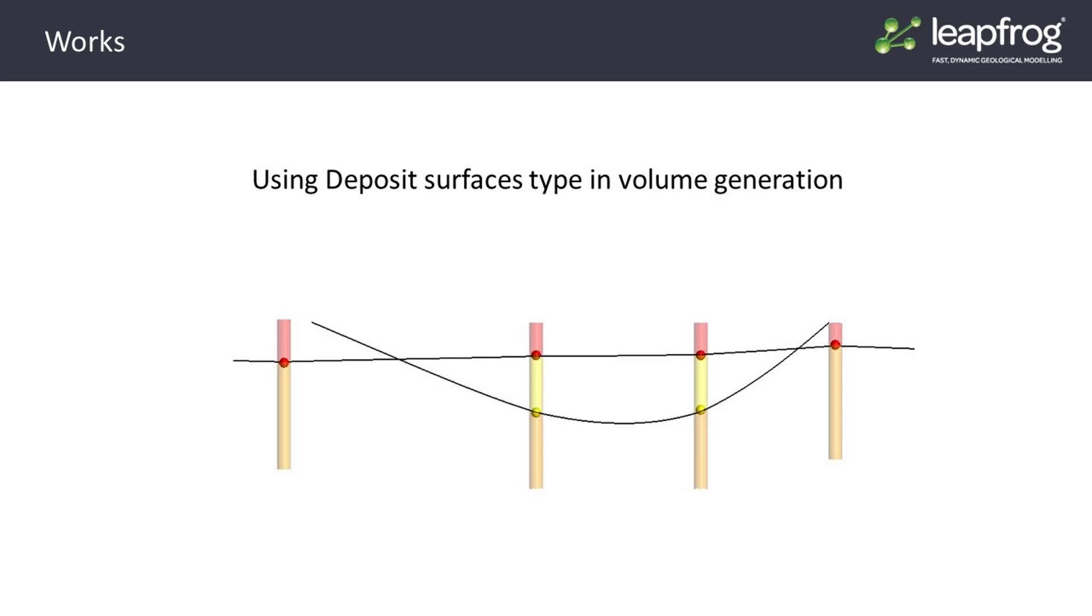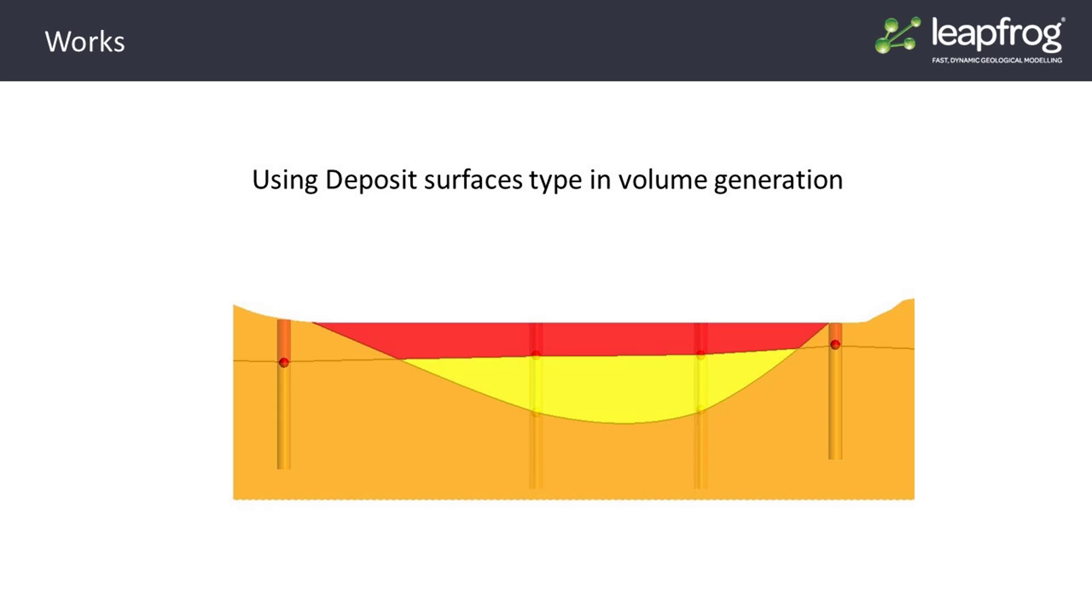In this example, which is in section view, the two surfaces, the red-yellow and the yellow-orange, are identical to those in the erosion example and both are represented by black lines which intersect each other. As both surfaces are listed as deposits, the younger surface stacks on top of the older surface and when the volumes are created, it results in stacking depositional units.